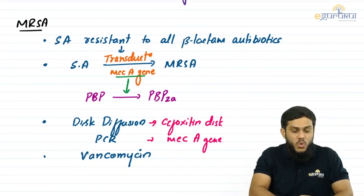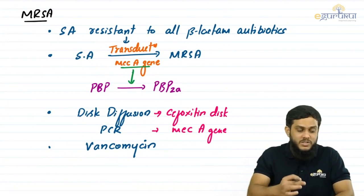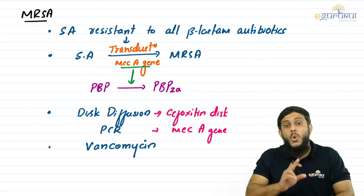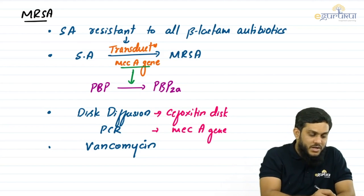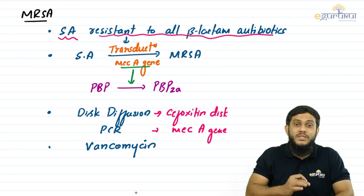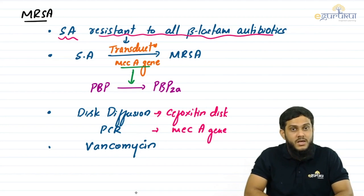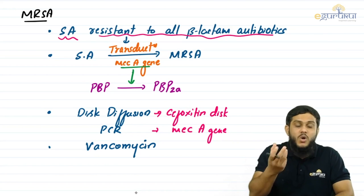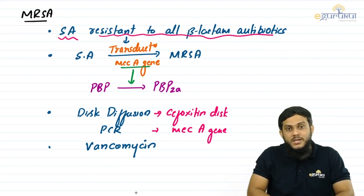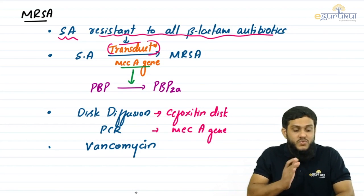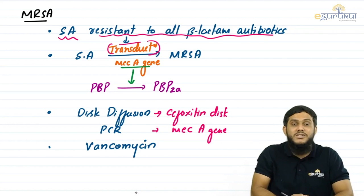Regarding resistance, MRSA stands for methicillin-resistant staphylococcus aureus. Importantly, MRSA is not only resistant to methicillin but to all beta-lactam antibiotics — methicillin serves as a marker for all beta-lactam antibiotics. Staphylococcus aureus acquires this resistance through transduction — the transfer of resistant genes from resistant to susceptible staphylococcus aureus via bacteriophage.